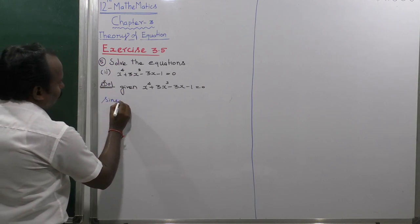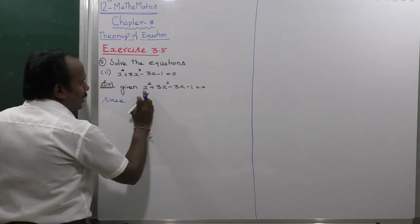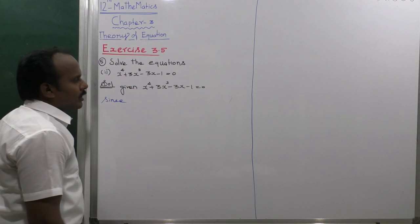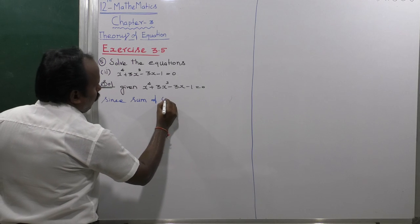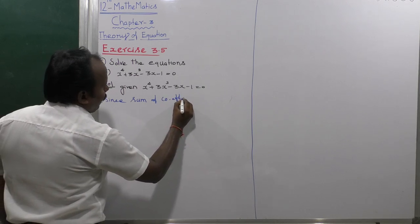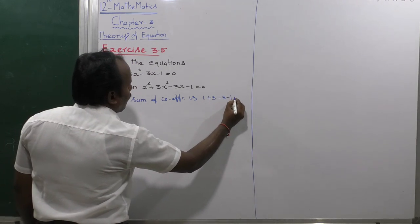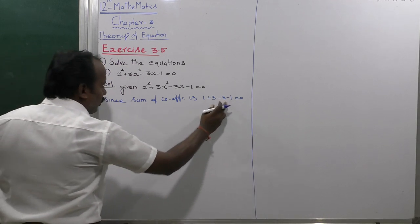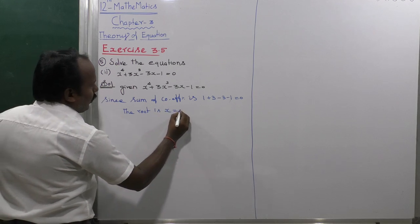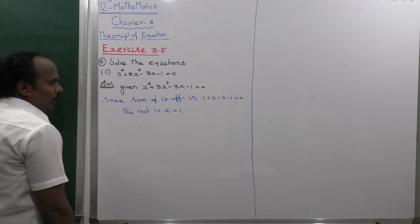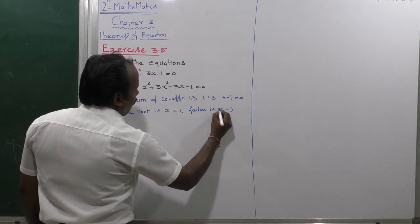Since the sum of the coefficients is 1 + 3 + 0 - 3 - 1 = 0, the sum of the roots is equal to 0. Therefore x = 1 is a root, and x - 1 is a factor.